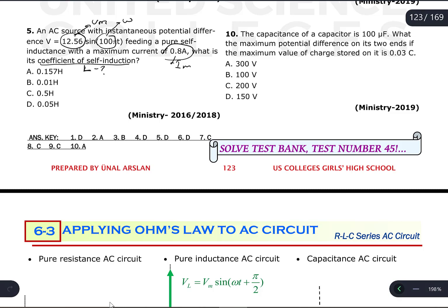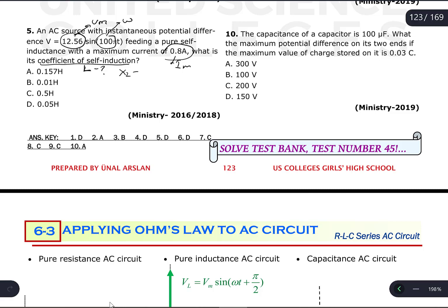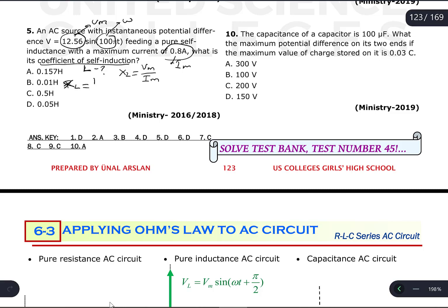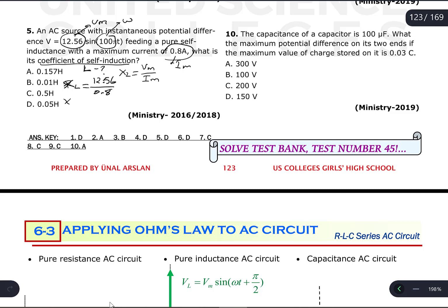To calculate L, we first need X_L, since L can only be calculated from X_L. There are two methods; we will use Ohm's law: X_L = V_max / I_max. So X_L = 12.56 / 0.8 = 15.7 ohms. The inductive impedance of this coil is 15.7 ohms.